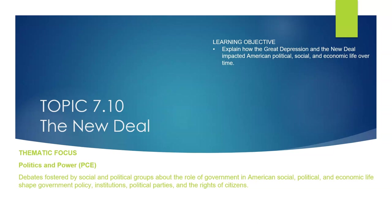Hello, and welcome back to Era 7 of the AP U.S. History Curriculum. In the last video, we looked at the stock market crash, its causes and effects, namely the Great Depression that began in late 1929 and stretched throughout the 1930s. In this video, we will be looking at Topic 7.10, The New Deal, which is the collection of government programs passed under Franklin Delano Roosevelt that was meant to address the problems of the Great Depression.